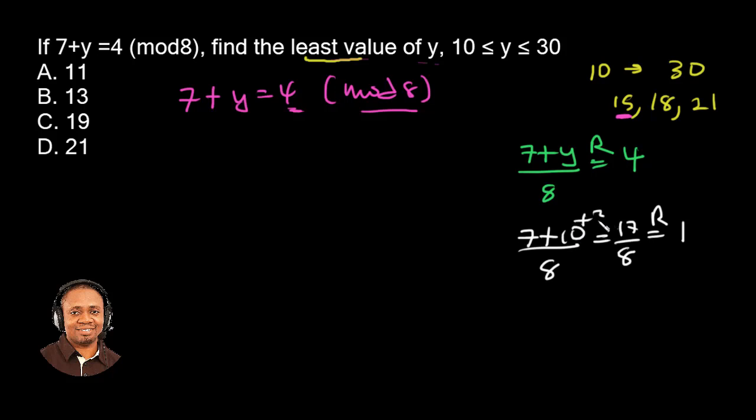So 10 plus 3, so we have 13. So the value that we are looking at, that is the first value that is going to give us a remainder of 4 is 13.